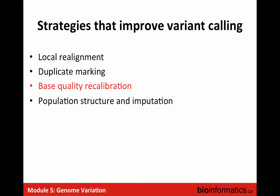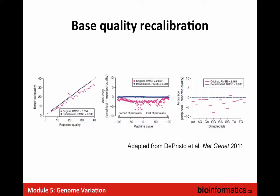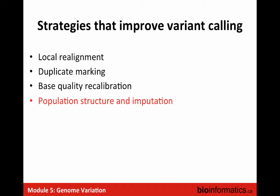The last pre-processing step is base quality score recalibration. Because the quality scores from the instrument feed directly into the variant-calling formula, if the sequencer makes systematic errors in evaluating the error rate, that translates into bad variants being called. Readjusting these scores before feeding them into the formula improves the final calls.